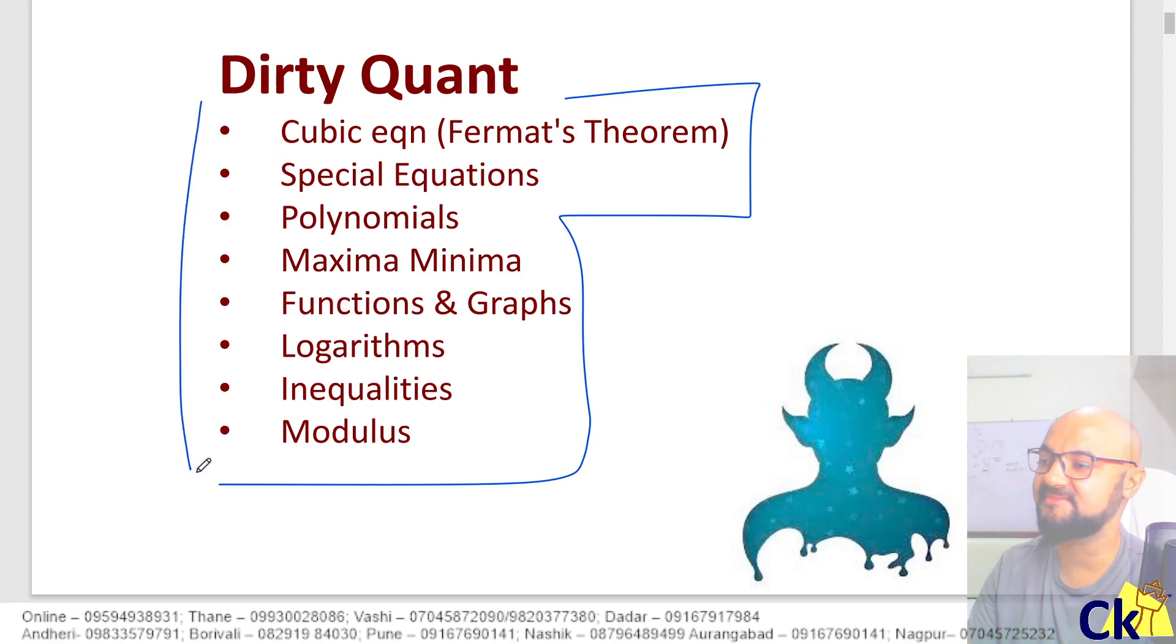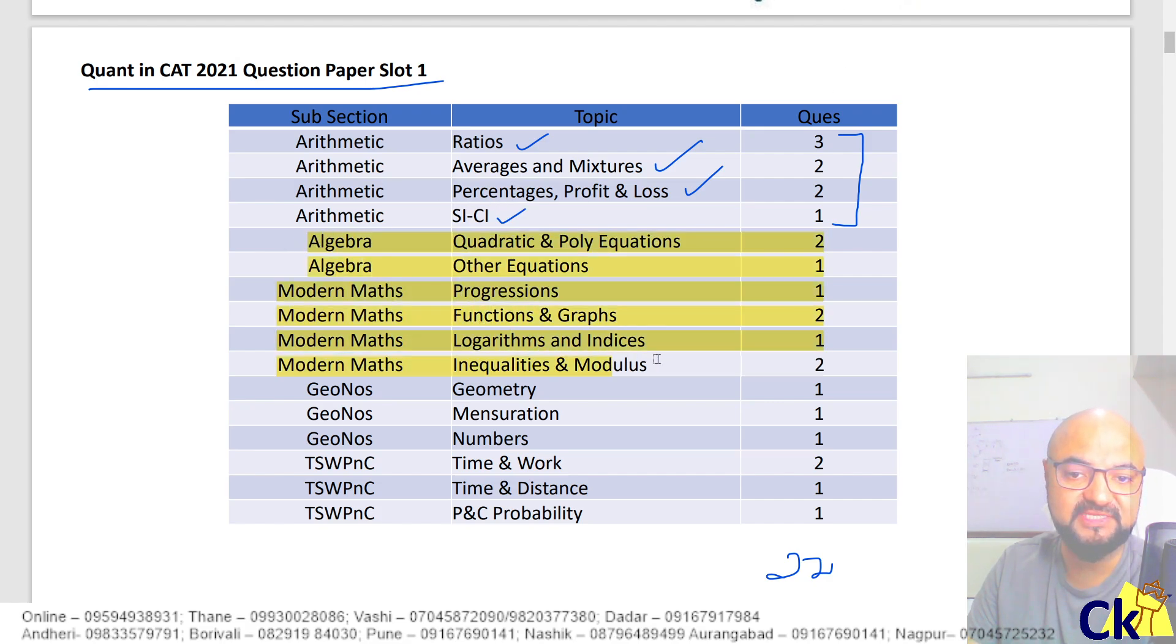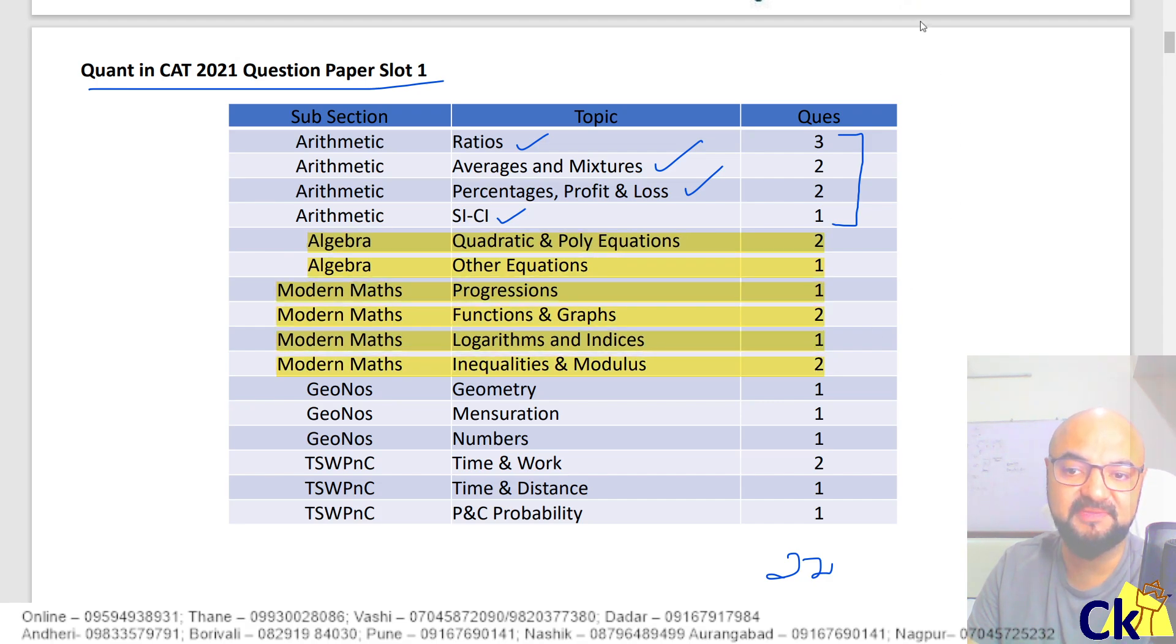So dirty quant in this side topic. If I look at the CAT paper, CAT 2021 slot 1 ka paper, obviously it was dominated by arithmetic. Total, I think there were 22 questions. Dominated by arithmetic: ratios, percentage, mixtures, profit and loss, simpleness, co-interest. Har banda ho focus karne wala hai. But I wanted to focus on these topics as well. Yeh bhi kam nahi hai.